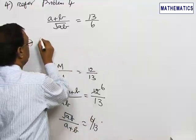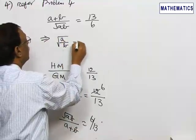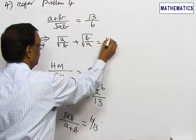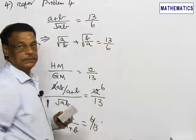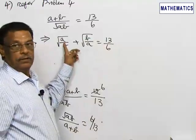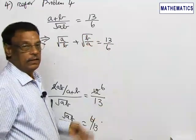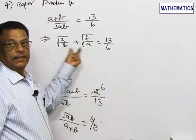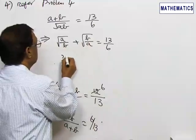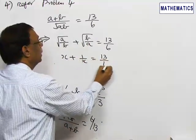This implies root of A by B plus root of B by A is equal to 13 by 6. Now, observe the first term is the reciprocal of the second term and vice versa. If you assume this as X, this will be 1 by X, so putting this as X, this will be 1 by X 13 by 6.